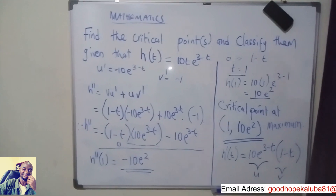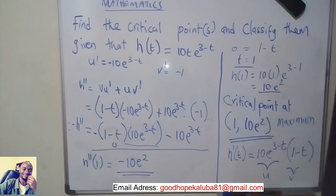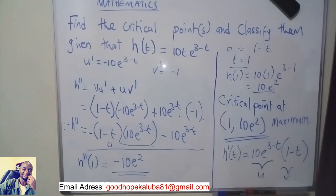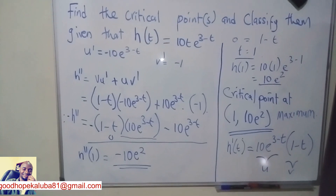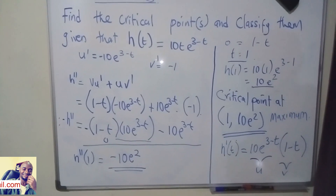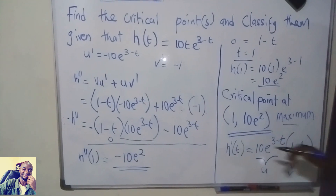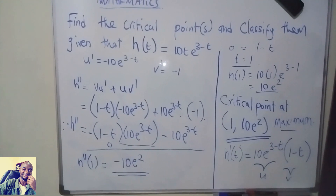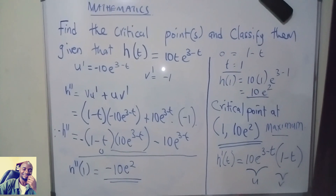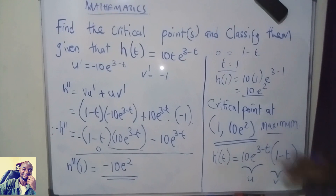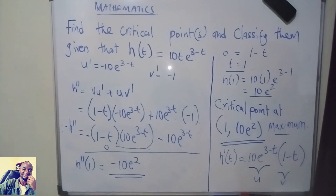So this is how you find the critical point and classify it. The first thing to do is differentiate, equate to 0, and find the critical point. Then to classify it, perform the second derivative test: a negative result means maximum, a positive result means minimum, and a zero means it's a saddle point. Thank you for joining me — subscribe to my YouTube channel for more videos.